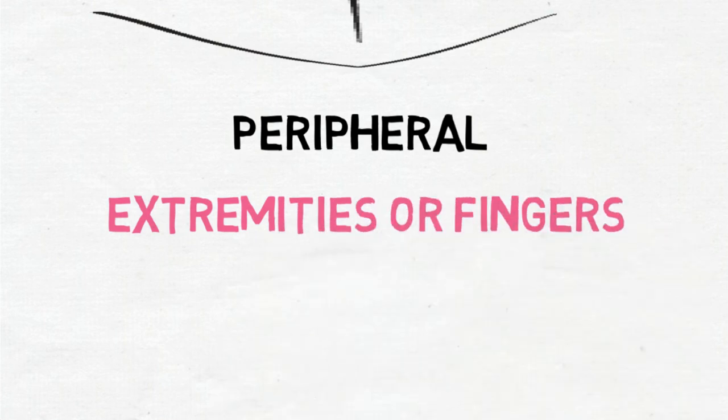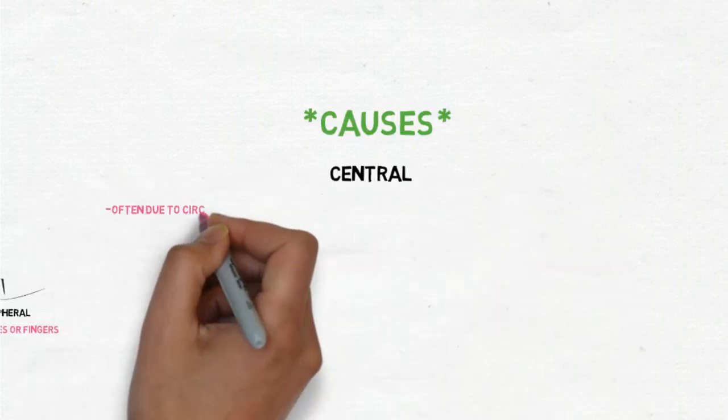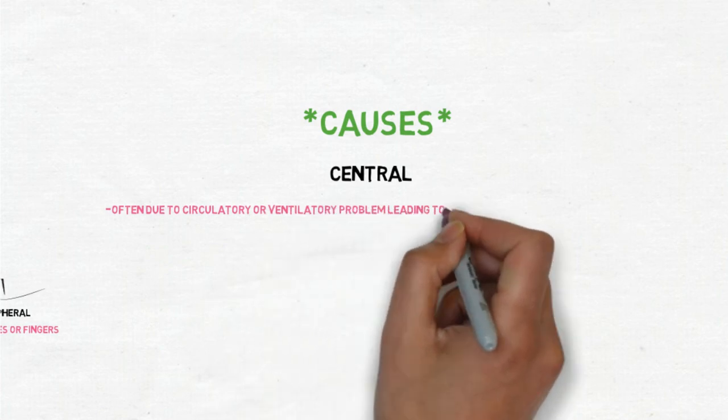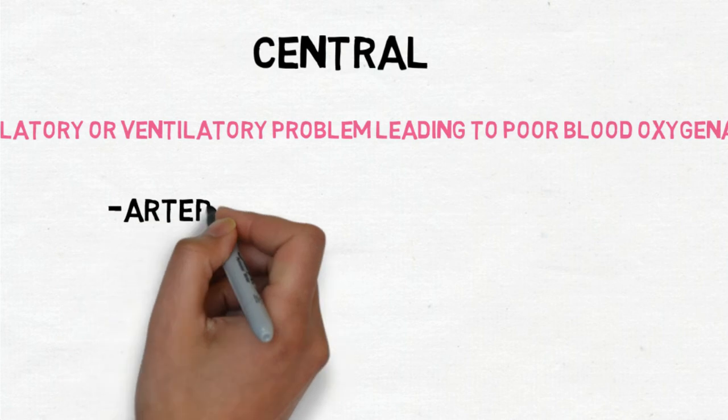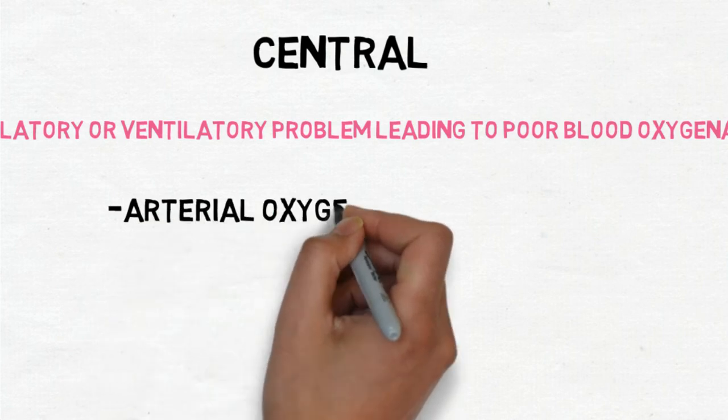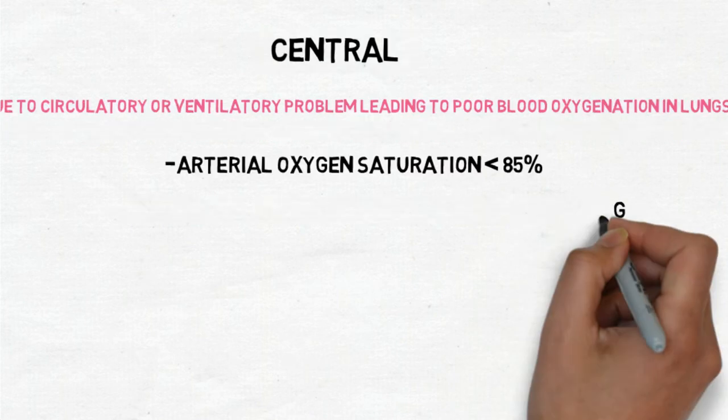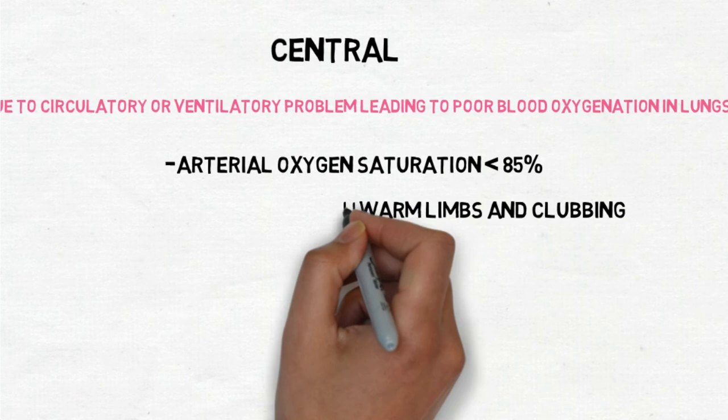Let us know about the causes of central cyanosis. Central cyanosis is often due to circulatory or ventilatory problems leading to poor blood oxygenation in lungs. When there is arterial oxygen saturation less than 85% in the blood, then we can see this kind of central cyanosis.